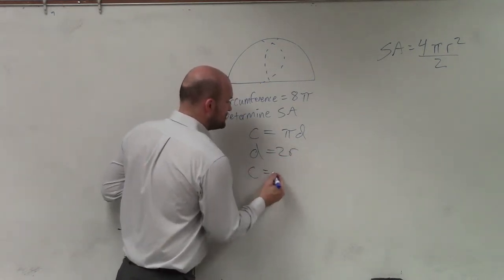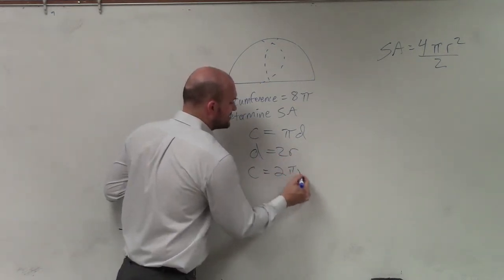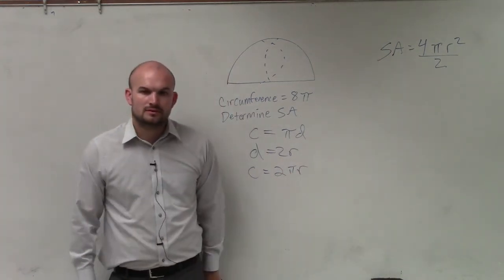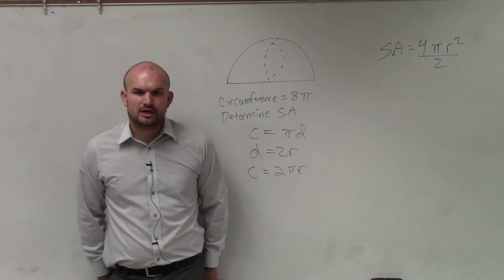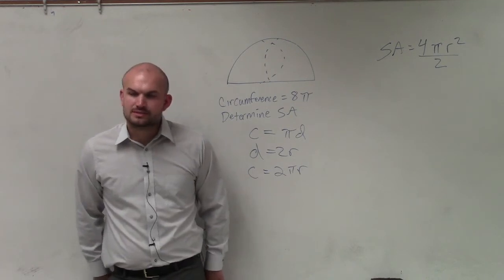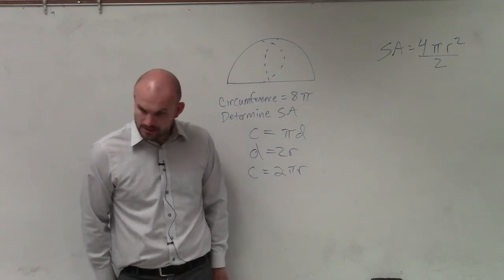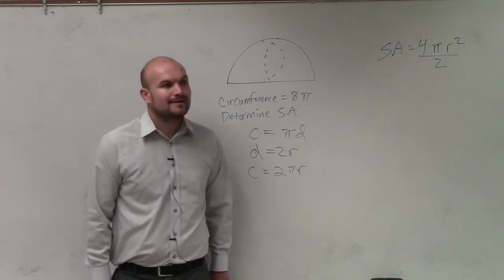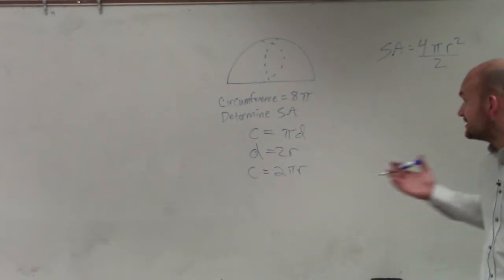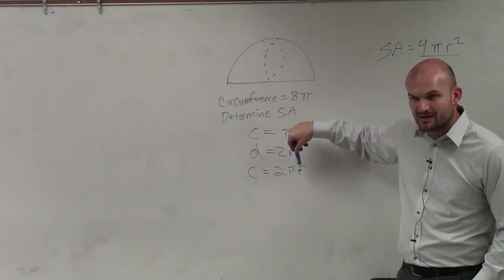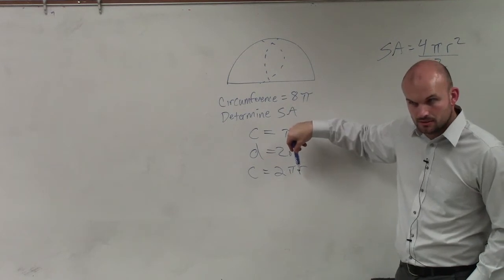2r. So really, circumference, you could also write as, a lot of times, you write this as 2πr. What was the one for, like, d1 and d2? That was for the area of a kite or a rhombus. So in this case, ladies and gentlemen, if we know the circumference is 8, can we figure out what π or r is? Yeah.